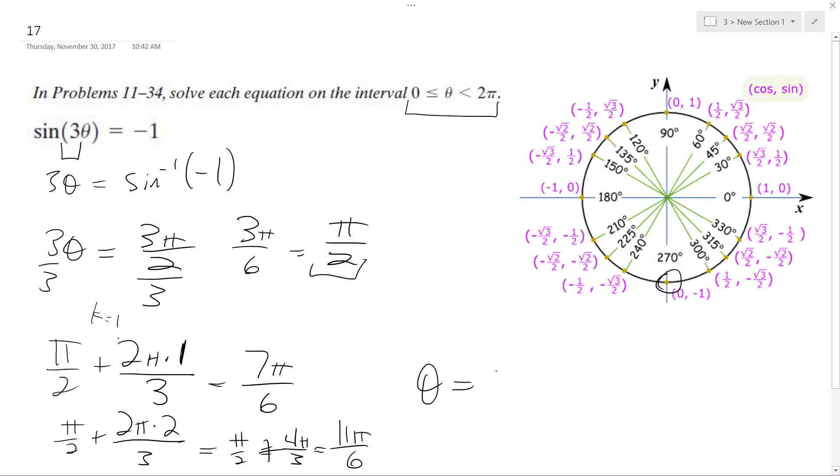Alright, so our final solution for theta equals pi over 2, 7 pi over 6, and 11 pi over 6. And that's it. Thanks.